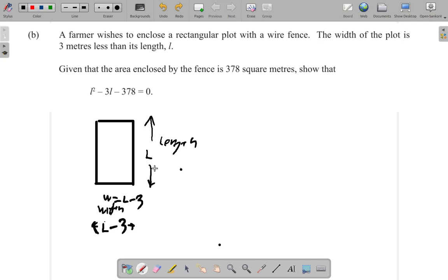Now, the area enclosed by the fence is 378 square meters. So let me just erase part of this. So this width here is L minus 3. Now, by the fence, remember that is a rectangular plot. It encloses with a wire fence. So these four lines would be like the fence you're looking at. And the area is 378 square meters.